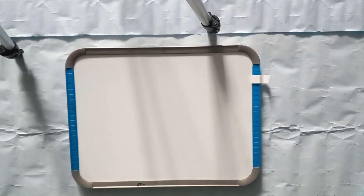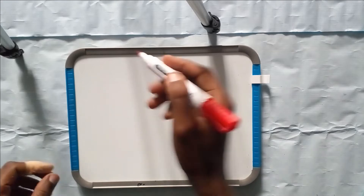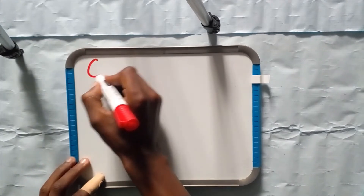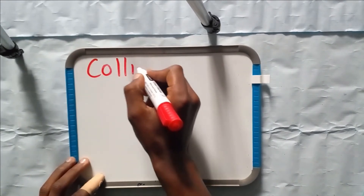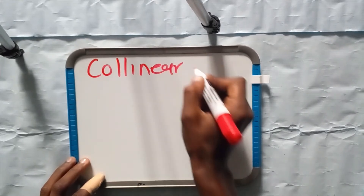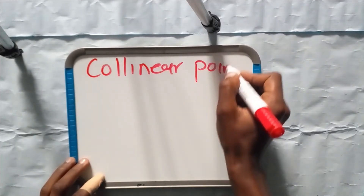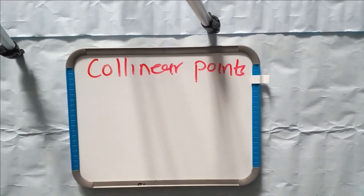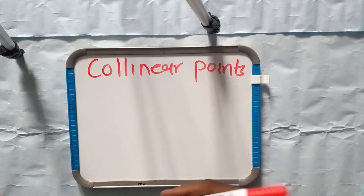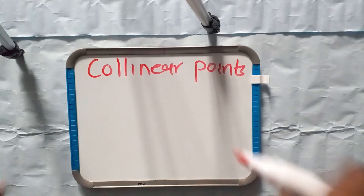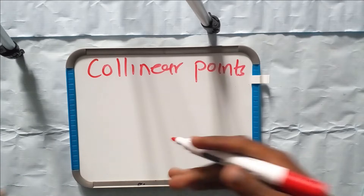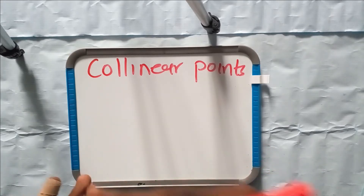Hi everyone and welcome to math tutorial sessions. In this video I want us to talk about collinear points. Points are collinear if those particular points are on the same straight line.